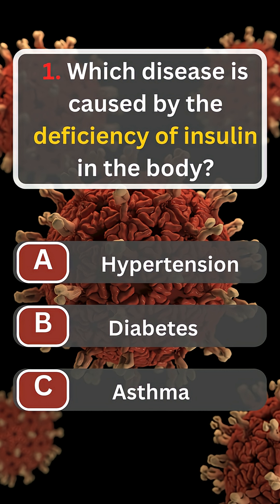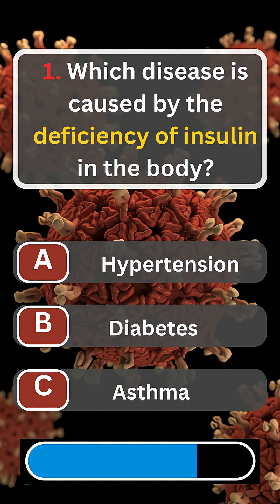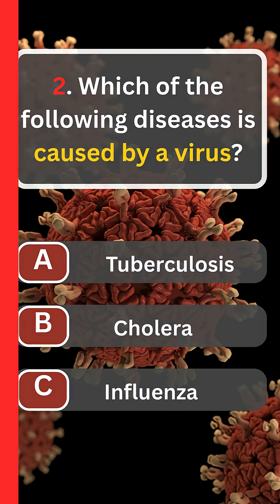Question number one. Which disease is caused by the deficiency of insulin in the body? A. Hypertension. B. Diabetes. C. Asthma.